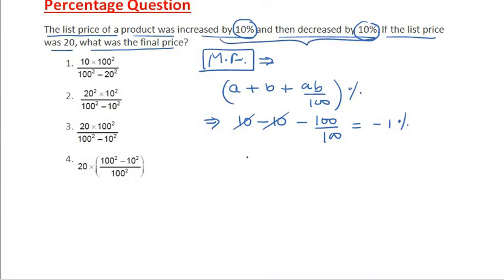It means overall in this particular case, the list price will decrease by 1%. And since the initial price is given to us as 20, obviously we can say that final price, final price in this particular case...